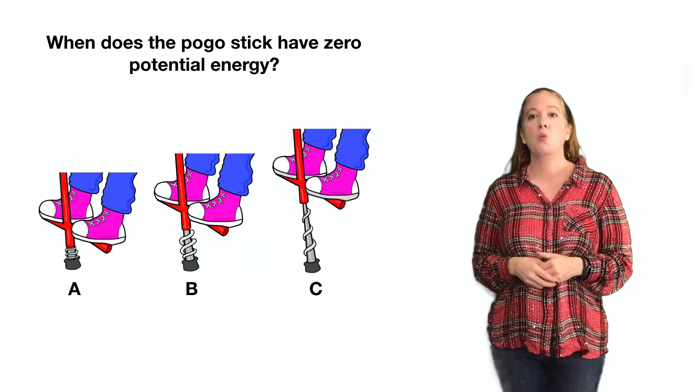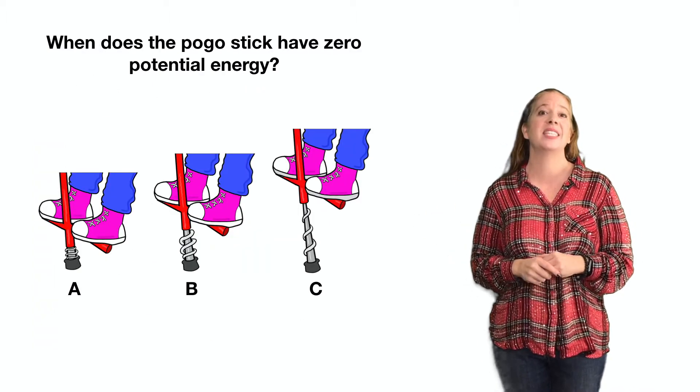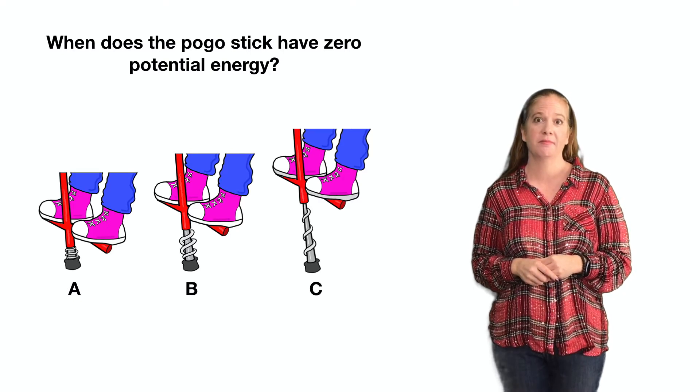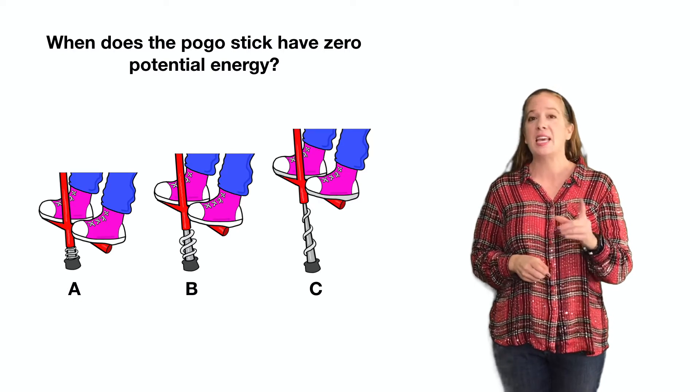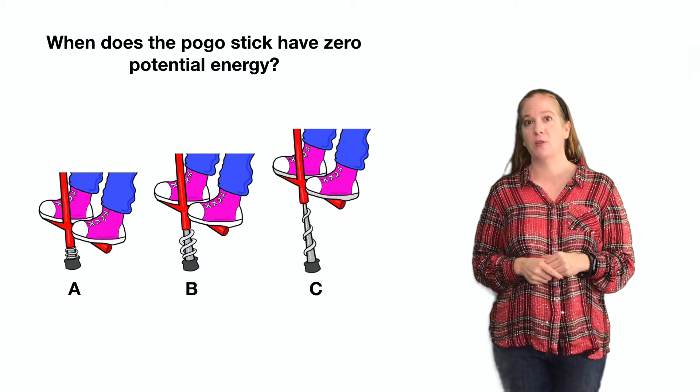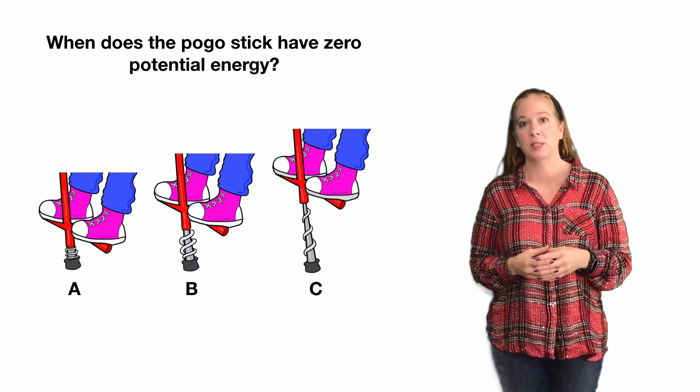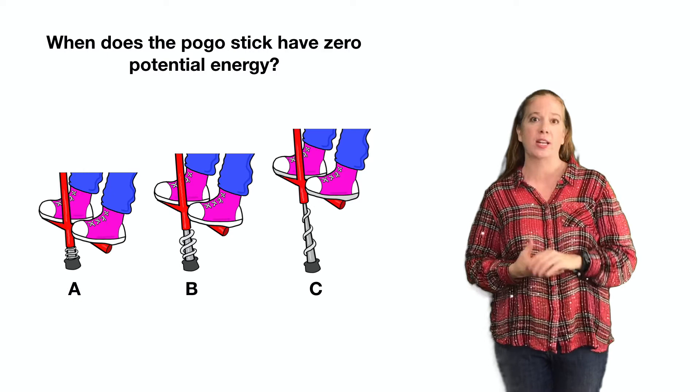Let's look at this picture. When does the pogo stick have zero potential energy? If you said B, you are correct. B is where it's at its resting position. A is compressed and C is stretched.